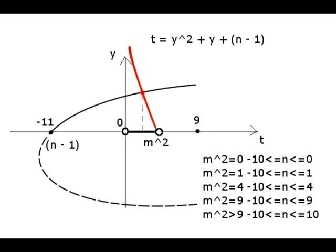And finally, when m squared is greater than 9, that is equal to 16, 25, 36, etc., up to 100, then all 21 curves with n from minus 10 to plus 10 have the value of n minus 1 less than m squared.